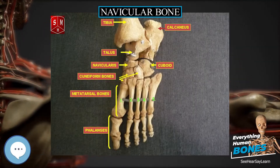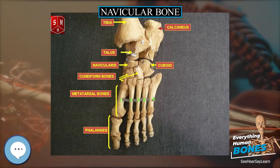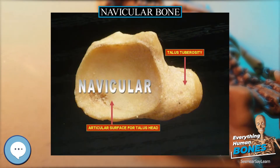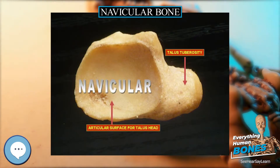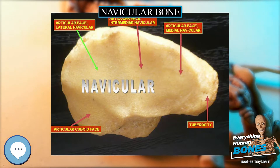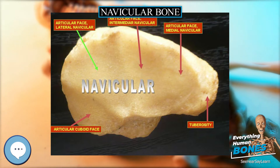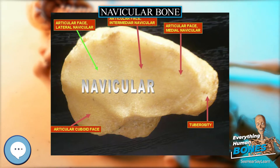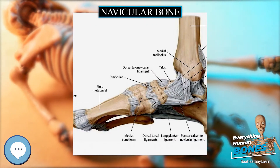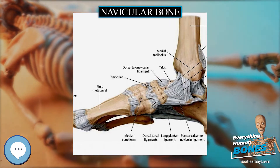The navicular bone is a small bone found in the feet of most mammals. In humans, it is one of the tarsal bones found in the foot. Its name derives from the bone's resemblance to a small boat, caused by the strongly concave proximal articular surface.